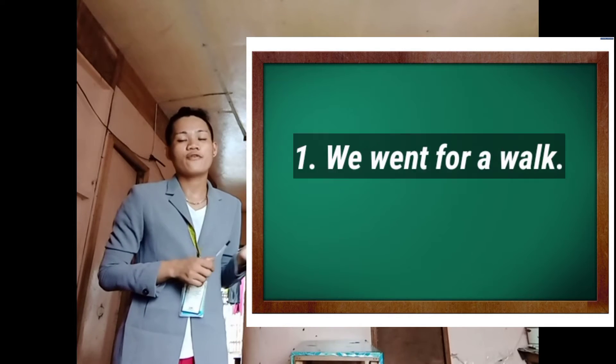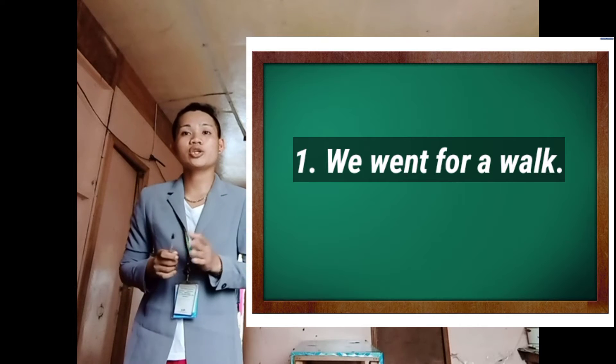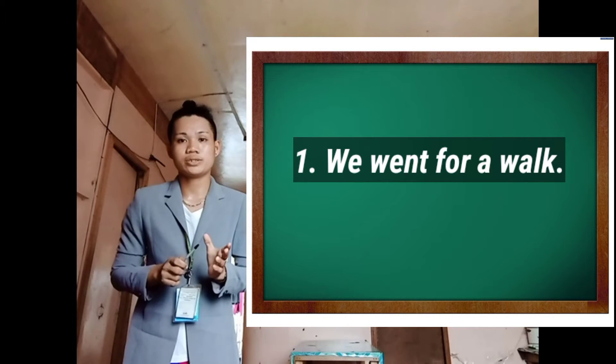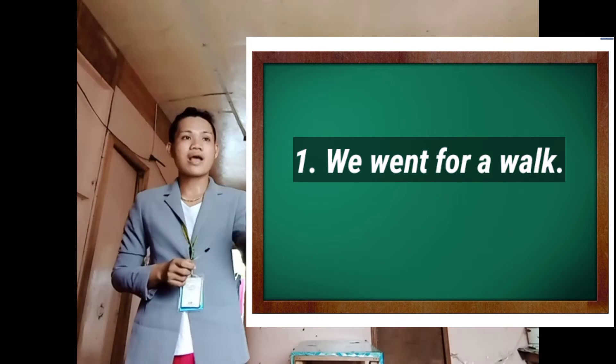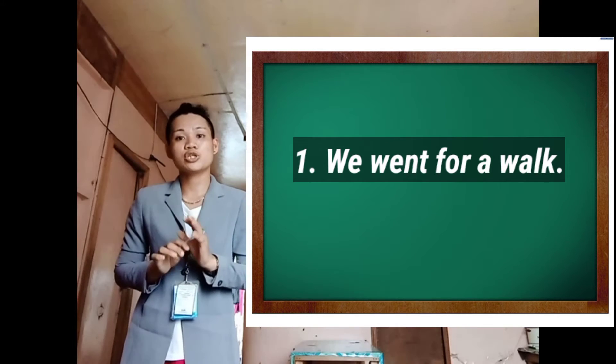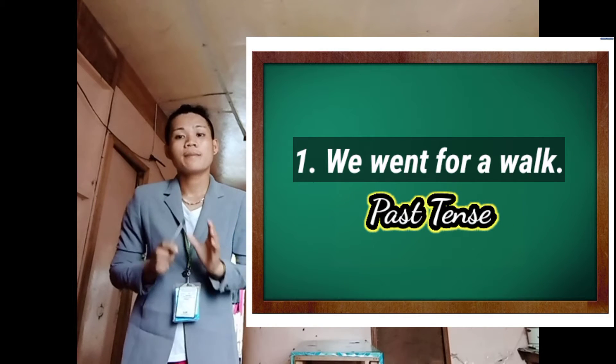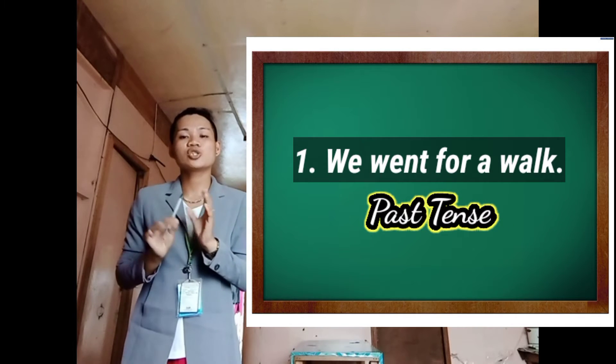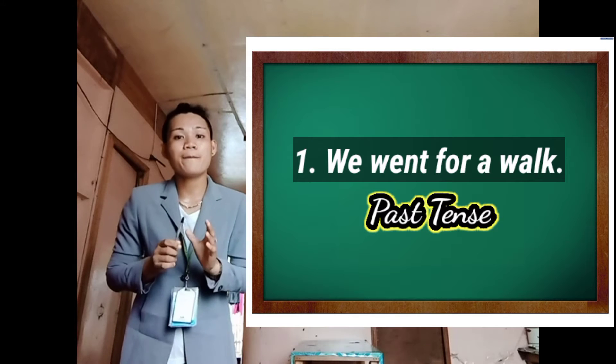We need to check and clarify what kind of verb tense each sentence uses. Look at each sentence and decide what tense it has been written in. Example number one: 'We went for a walk.' Who is willing to answer this question? Please stand up, Darwin. Okay, very good. This sentence refers to the past tense because it describes an event that has already happened.